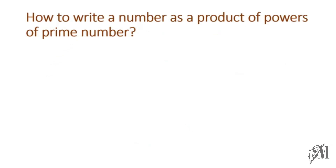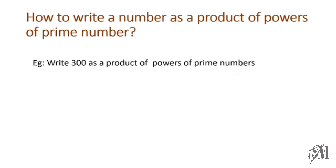Now let's see how to write a number as a product of powers of prime numbers. Example: write 300 as a product of powers of prime numbers. We divide 300 by prime numbers until we obtain 1. The smallest prime number is 2. Since the last digit in 300 is 0, we know it can be divided by 2 without a remainder. Then the answer becomes 150. Again it can be divided by 2, giving 75.